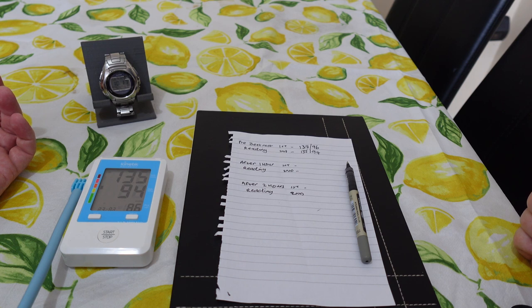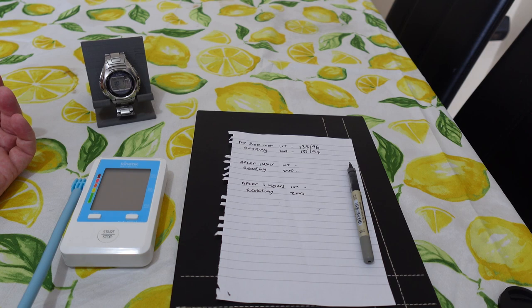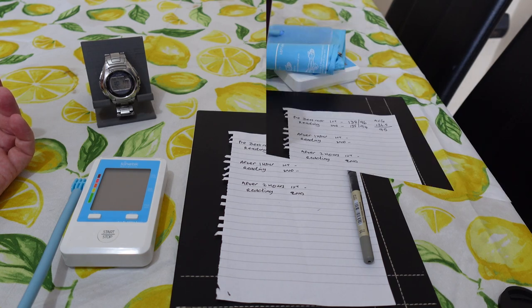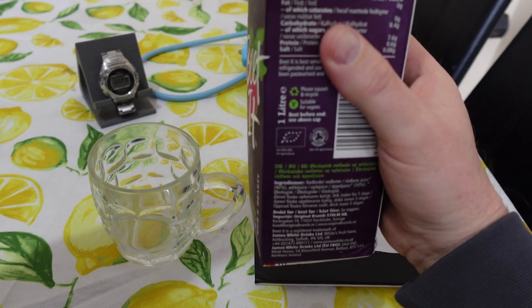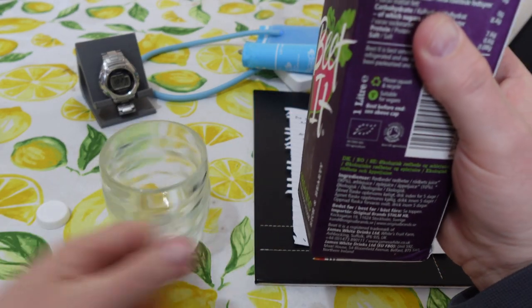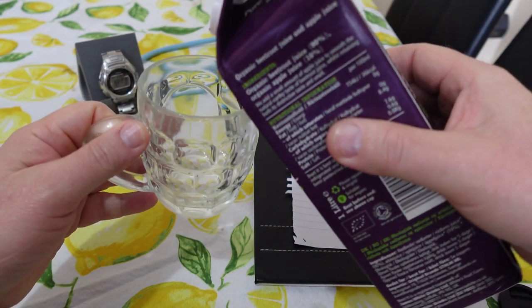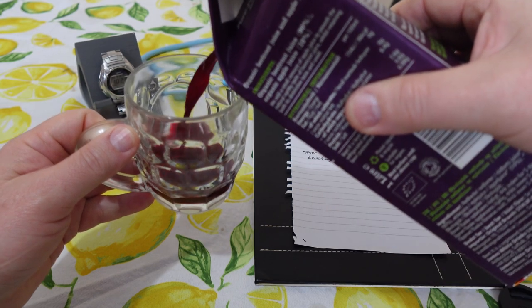So the next thing I'm going to do is drink my beetroot juice and see if there's any effect on it. I've never tasted it before so this should be interesting in itself. Alright, so let's have a glass of this beetroot juice. I'm going to have quite a big glass, probably about 200ml. Ooh what a lovely color.